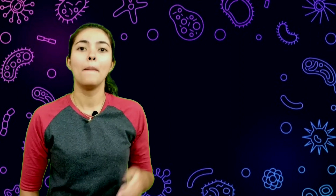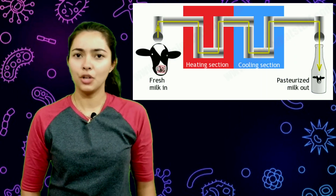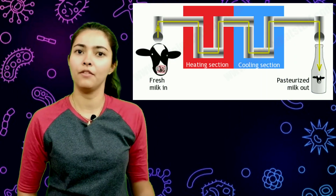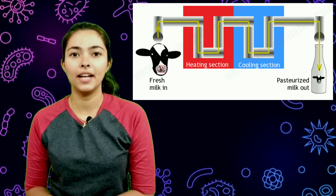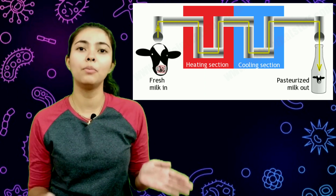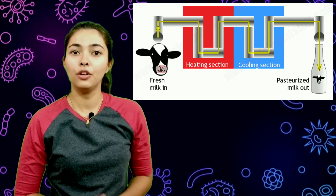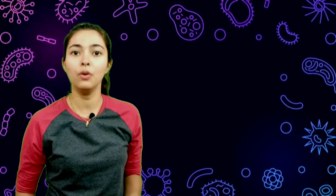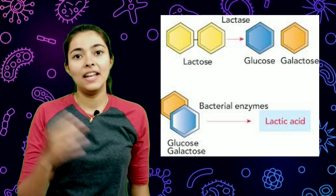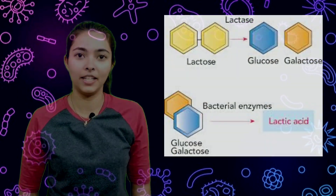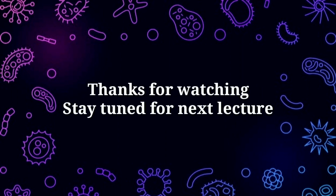First of all, we pasteurize the milk — we boil it, and after boiling, the unwanted microorganisms die. This procedure is called pasteurization. After this, with the help of Lactobacillus in the fermentation process, the lactose sugar in the milk is converted into lactic acid.